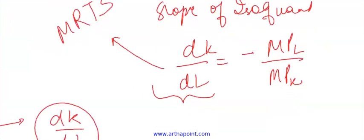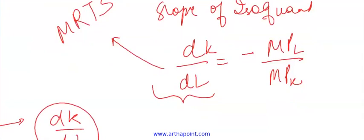So ideally I am saying how do I substitute capital for labor at this rate. So MRTS is basically the slope of the isoquant which is given by dk by dl.